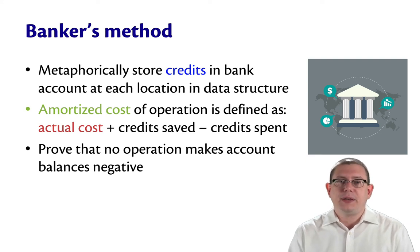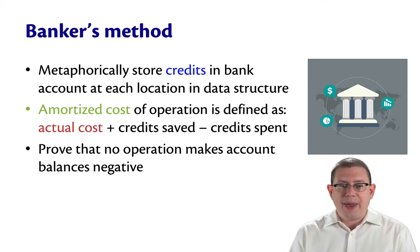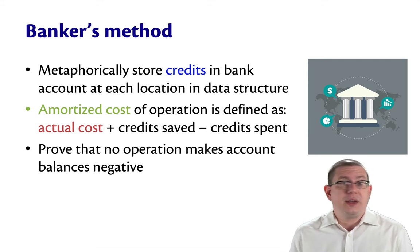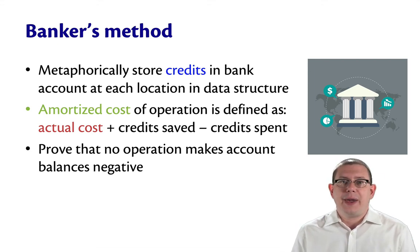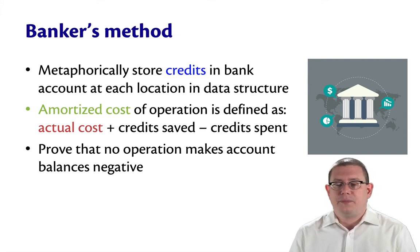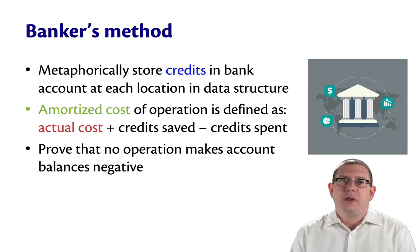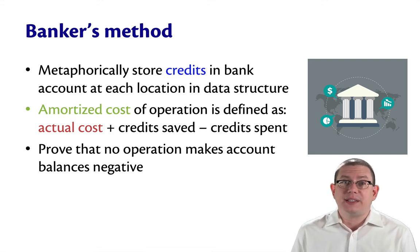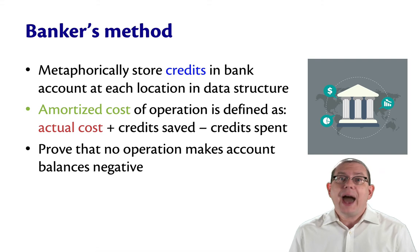The banker's method is to metaphorically store credits in a bank account at each location in a data structure. If you're doing this with a linked list, every node in the linked list has its own bank account. If you're doing it with a queue, every element in the queue has its own bank account. If you're doing it with a hash table with chaining, every binding represented as a pair in that hash table has its own bank account.